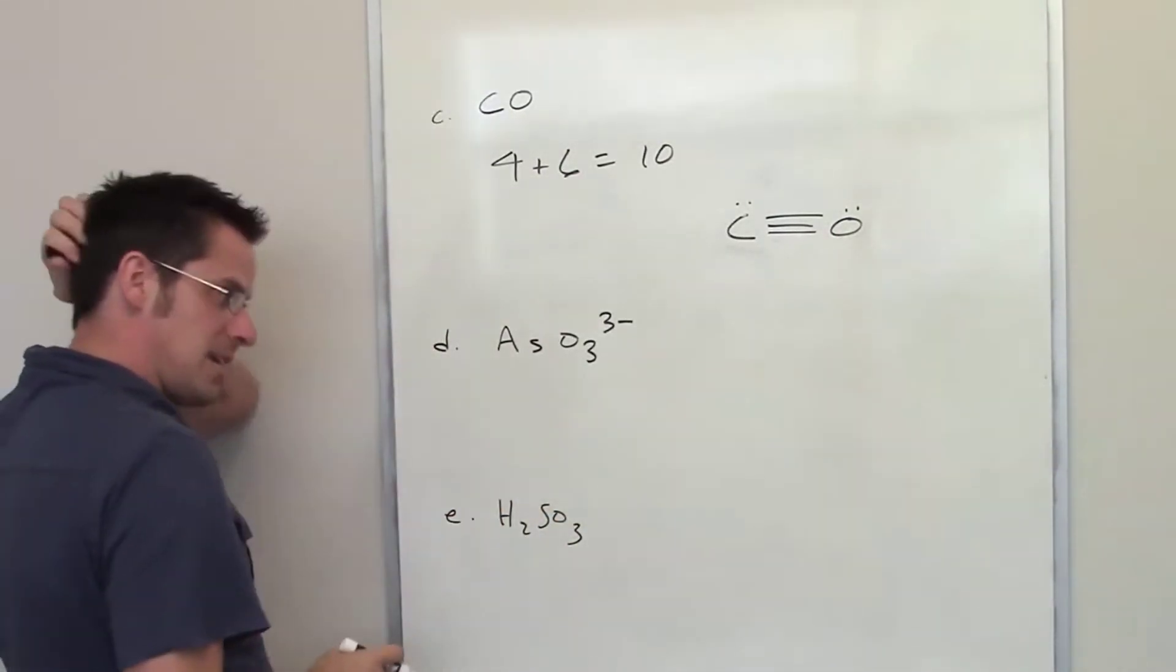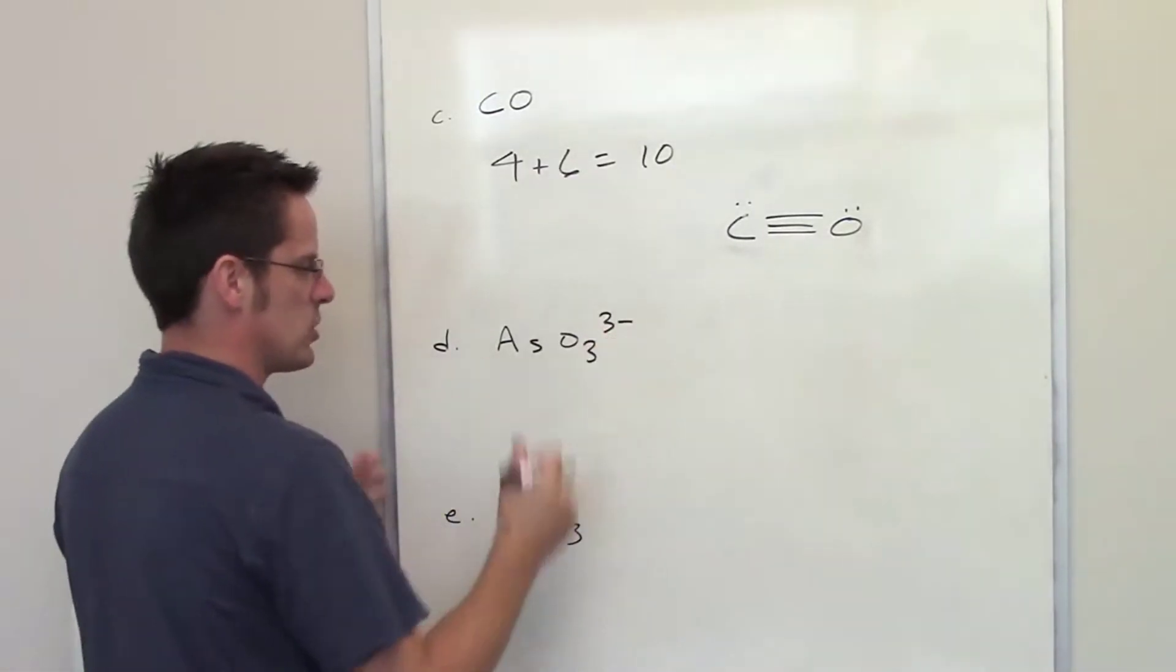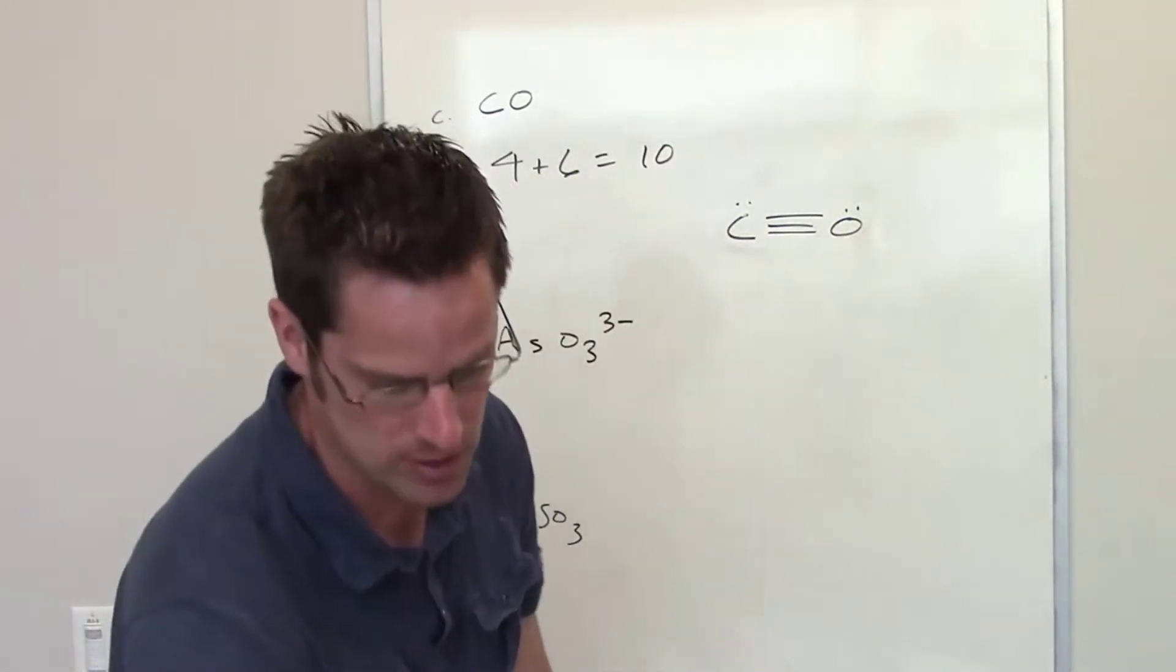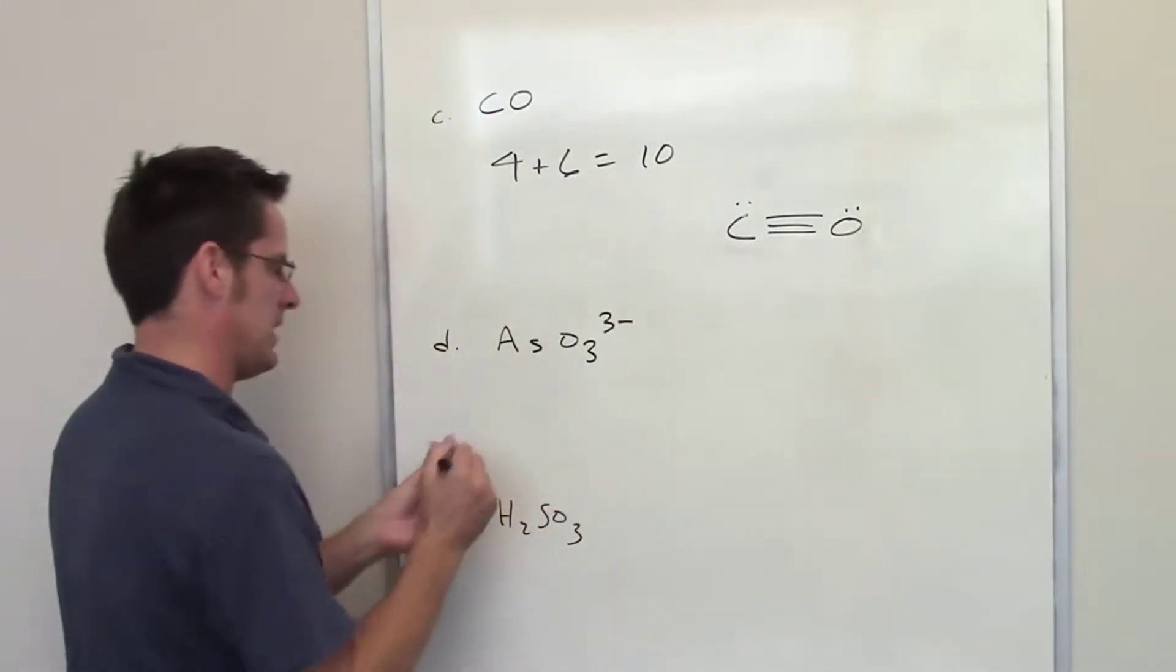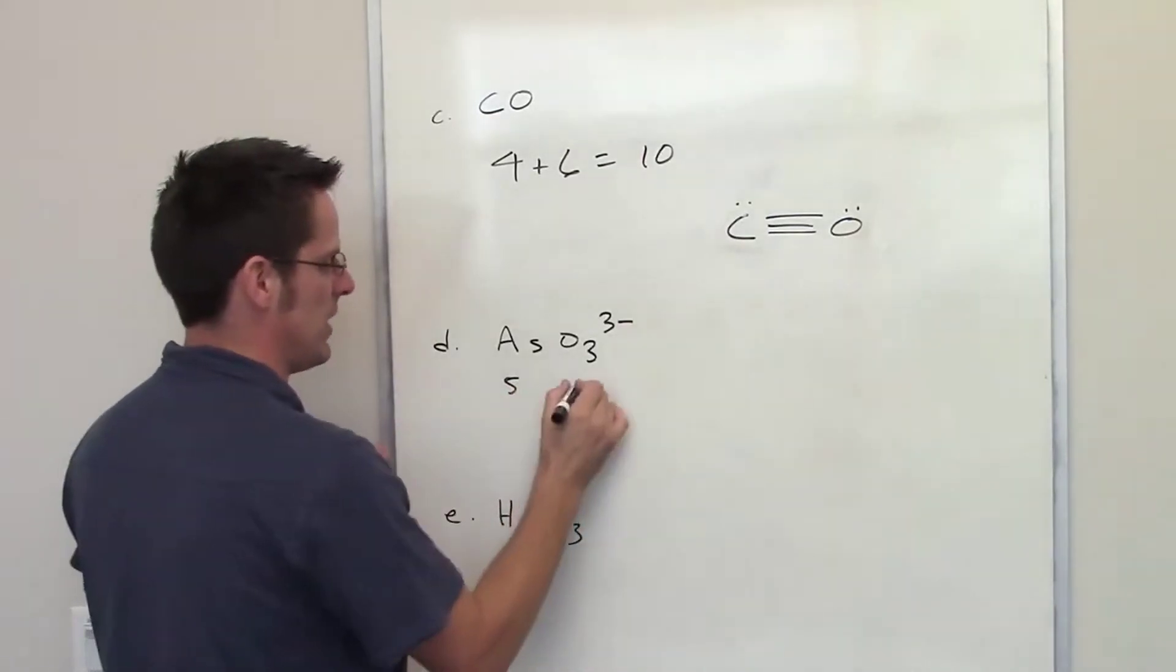Now, I'll do part D. In part D, I've got arsenic oxide, and it's got a negative three charge, so first thing I'm going to do is count up my total number of valence electrons. Arsenic is in column 5a of the periodic table, which means it has five valence electrons. Oxygen is in 6a, so it has six valence electrons,